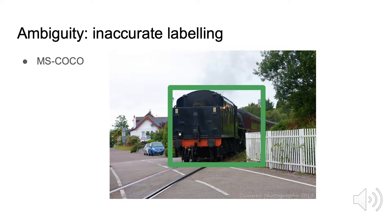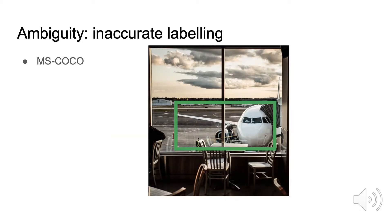For example, in MS COCO, the most standard object detection dataset, ambiguity can be introduced by inaccurate labeling. In this case, the tail of the train is not included inside the bounding box. And in this case, the tail of the airplane is not included in the bounding box.